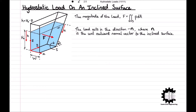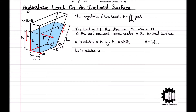The inclined coordinate u is related to the vertical depth coordinate h by h equals u sine theta, and the surface s has an area of a equals w l0, where l0 is the liquid's depth relative to the inclined coordinate u, as can be seen in the diagram. L0 is related to the vertical depth h0 by h0 equals l0 sine theta, and just from looking at the diagram, it is clear that l0 is greater than h0.